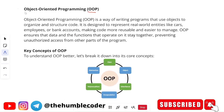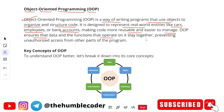The full form of OOPs is object oriented programming. OOPs is a way of writing programs that use objects to organize and structure code. It is designed to represent real life entities like car, employees, or bank accounts, making code more reusable and easier to manage. OOPs ensures that the data and the functions that operate on it stay together, preventing unauthorized access from other parts of the program.